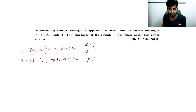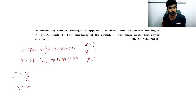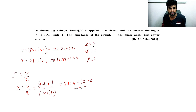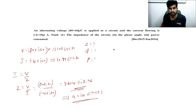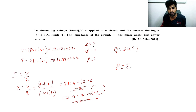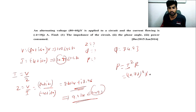To calculate Z: Z = V / I = (8 + j60) / (−4 + j10), giving Z = 2.414 + j8.96 ohms. Converting to polar form: Z = 9.284 ∠74.93°, so the phase angle is 74.93°. Power consumed = I²R = (10.77)² × 2.414 = 283.02 watts.